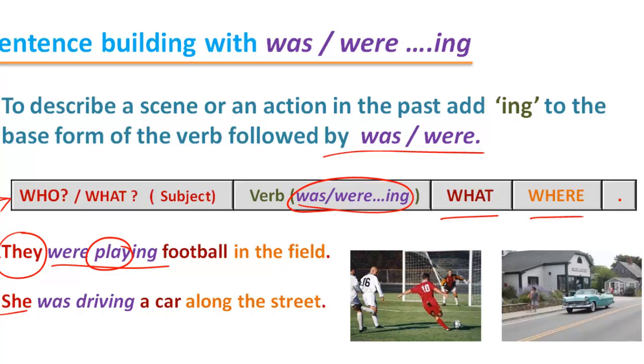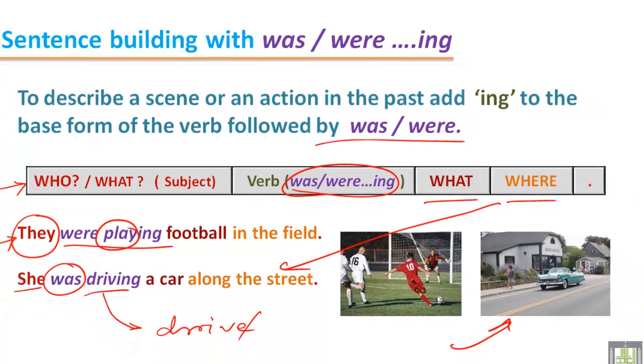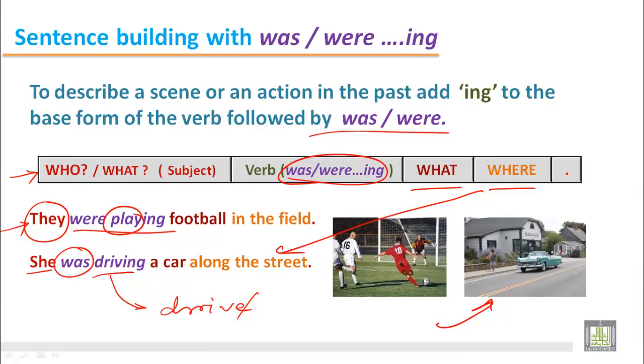In the next sentence, we see she. It is singular third person, so we have to put was in the past. And the verb drive is the main verb. But when we add -ing, we drop E and add -ing. So in this sentence, we find: She was driving a car. Where? Along the street. We see this picture here. She was driving a car along the street.